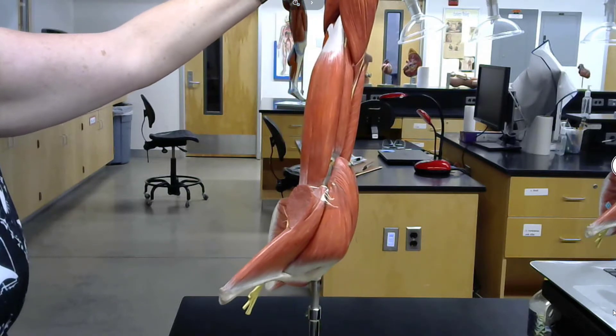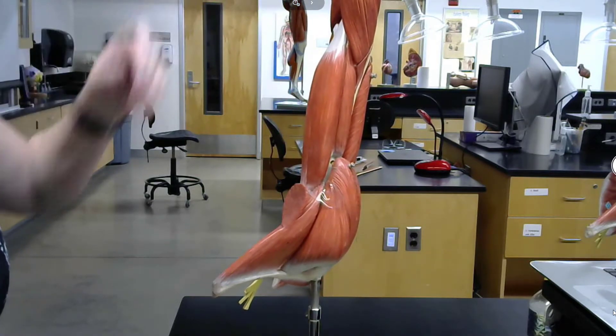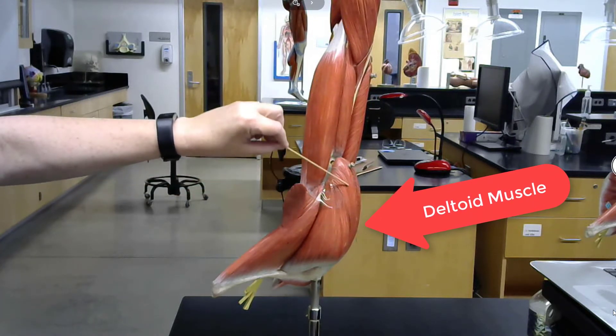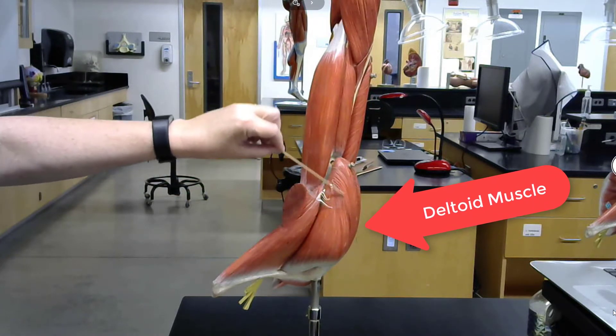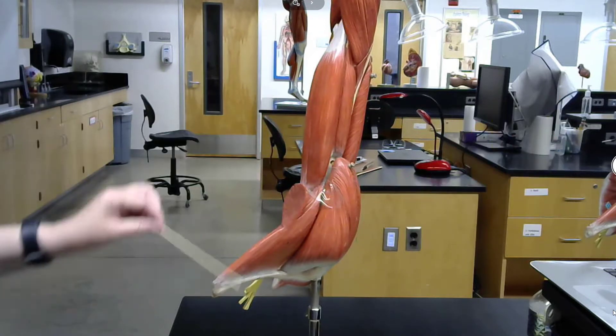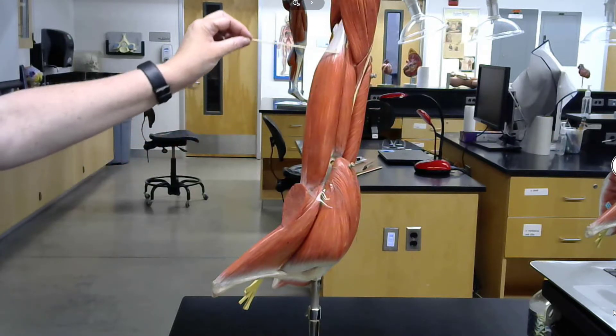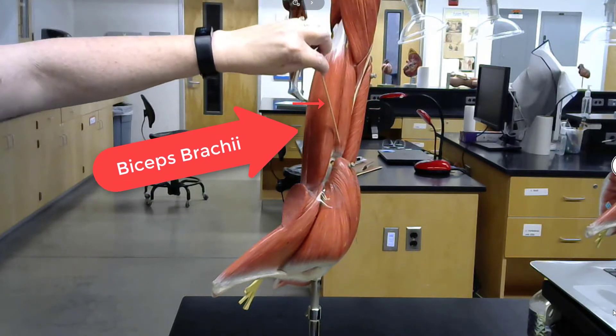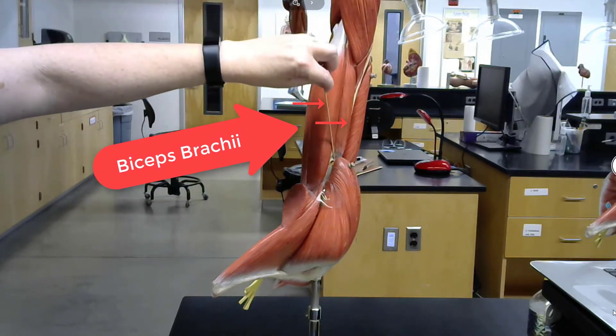And the top view. This is our deltoid. This is biceps brachii. And this muscle is also biceps brachii.